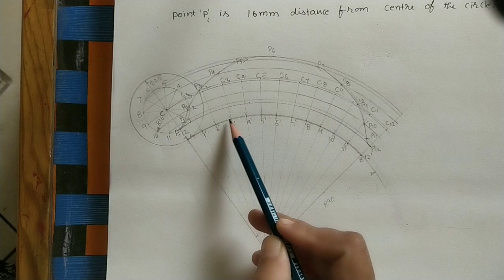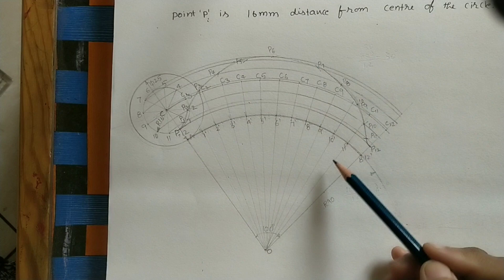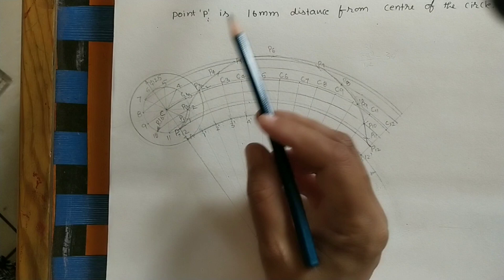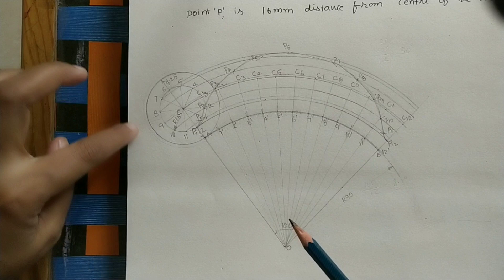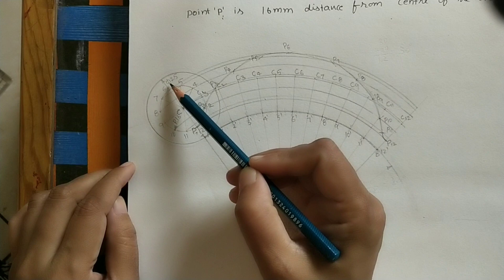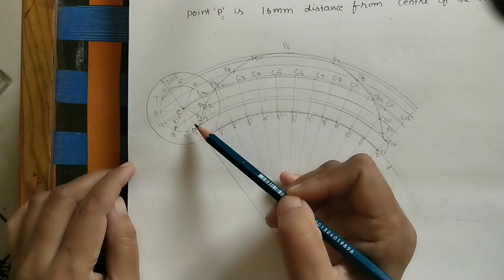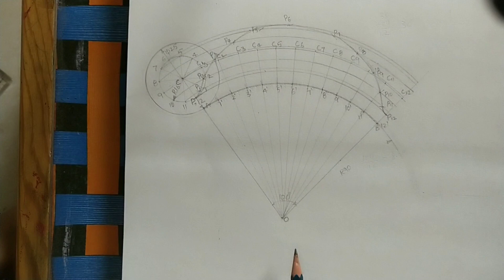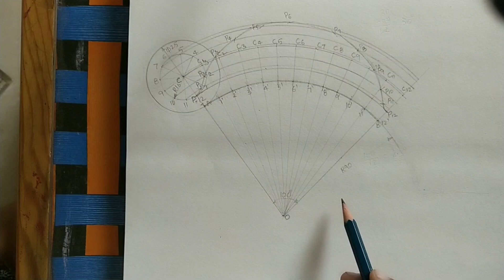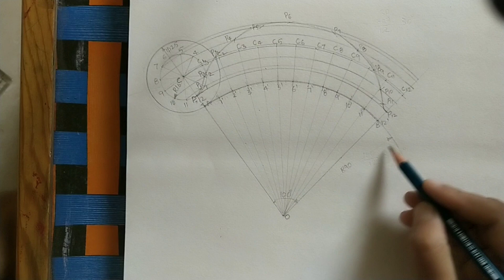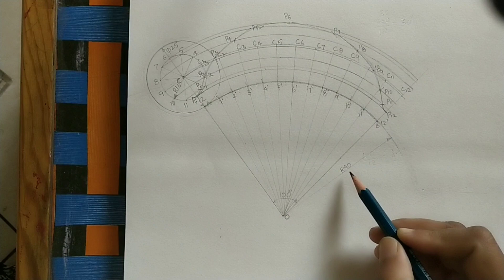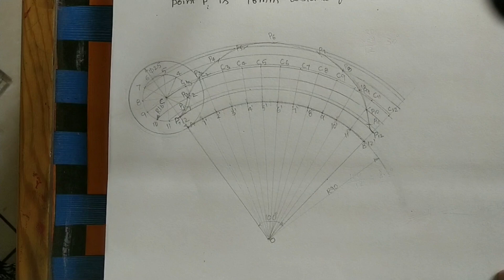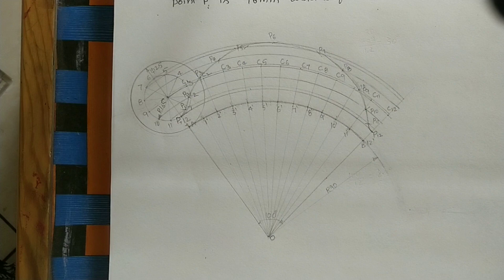The given circle, the given path, and the required curve should be in dark color compared to the other lines. Mark the given dimensions: circle diameter is 50 mm, the CP length is 16 mm — mark radius CP as R 16. The angle calculated is 100 degrees and the arc radius is 90 mm — mark R 90. This is the procedure for drawing the epitrochoid. If you like this lecture, hit the like button, subscribe to my channel, and share with your friends. Links for other cycloidal curves and trochoids are in the description box.